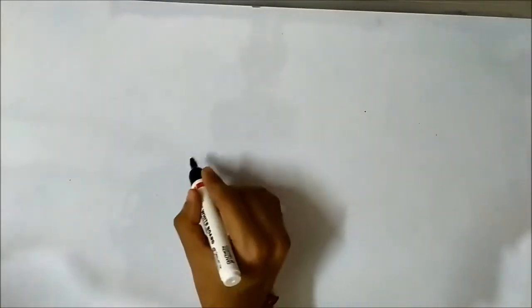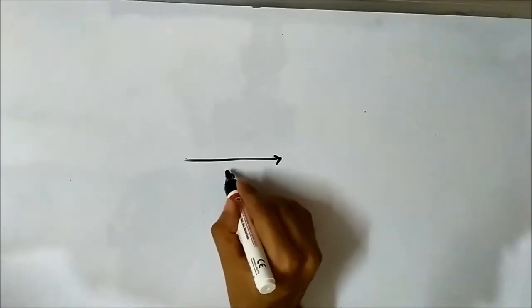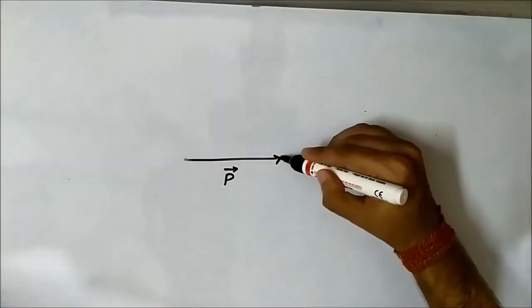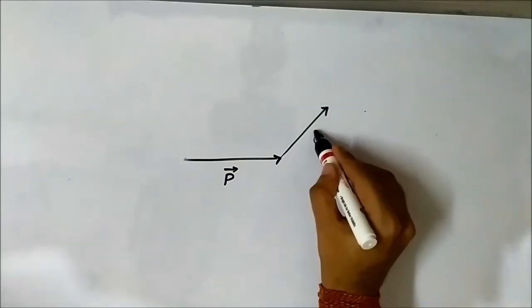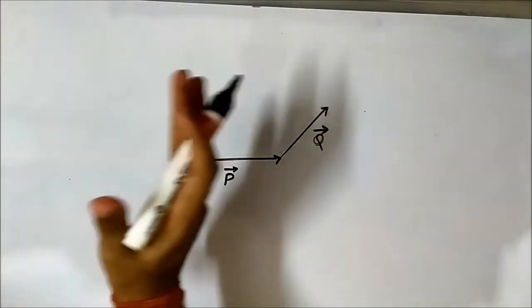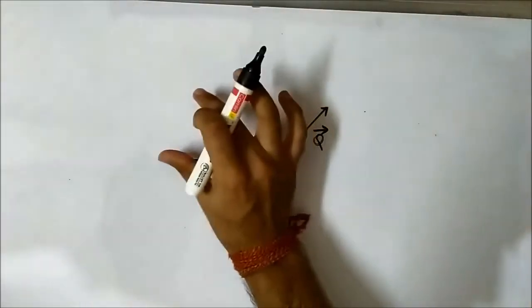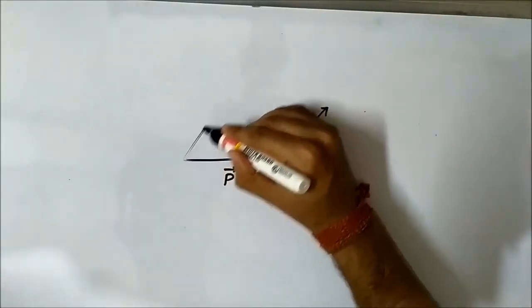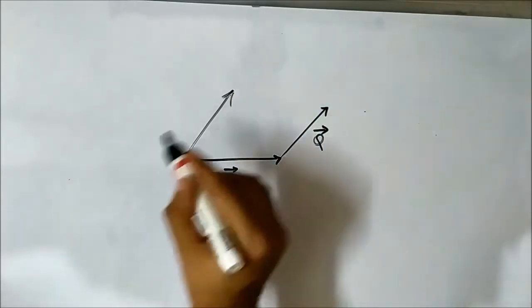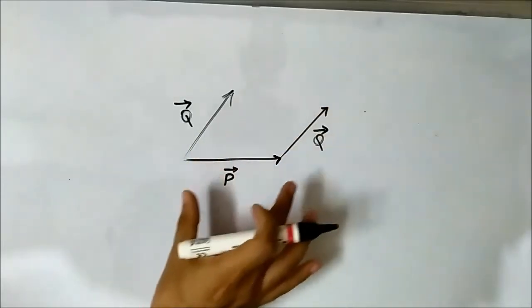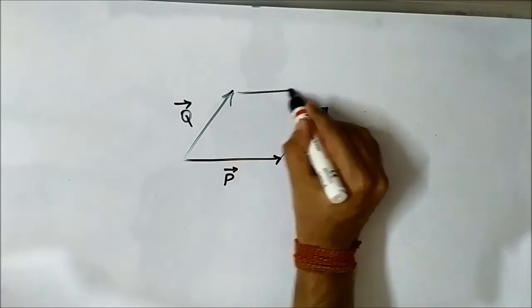According to the parallelogram law of vector addition, if we have two vectors P and Q, we have to perform some shifting techniques to shift these two vectors laterally in order to form a parallelogram. We will shift the Q vector sideways to the left, and shift the P vector to the top to form a parallelogram.